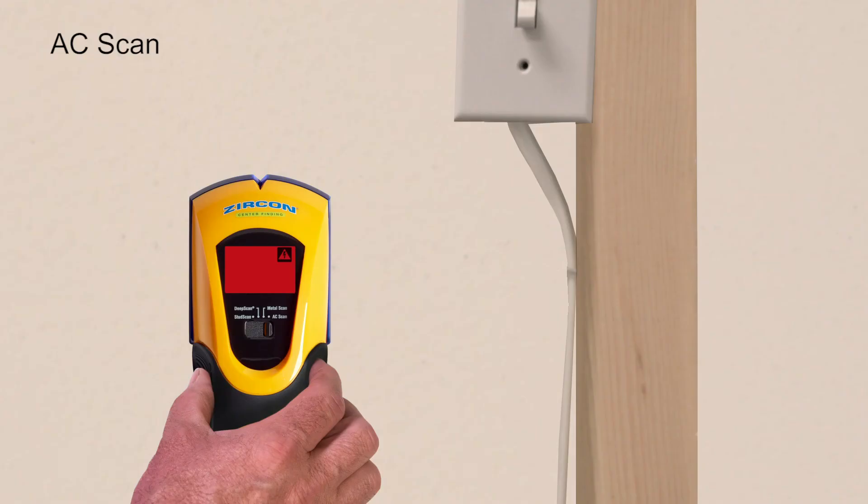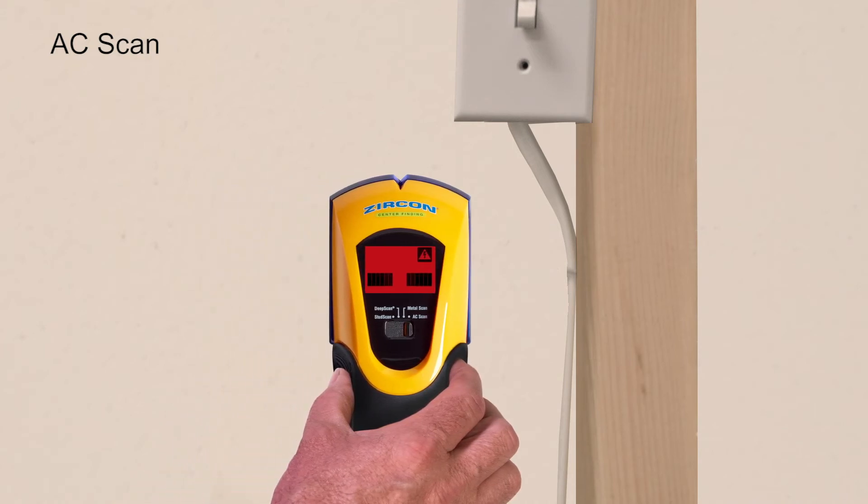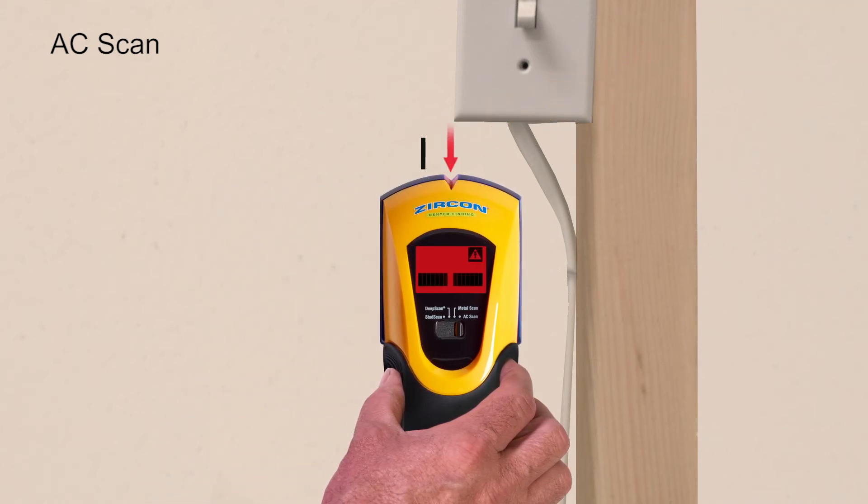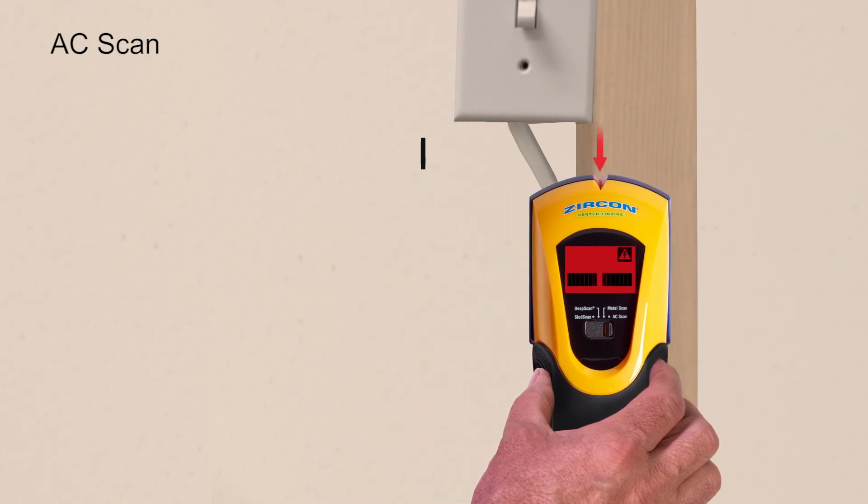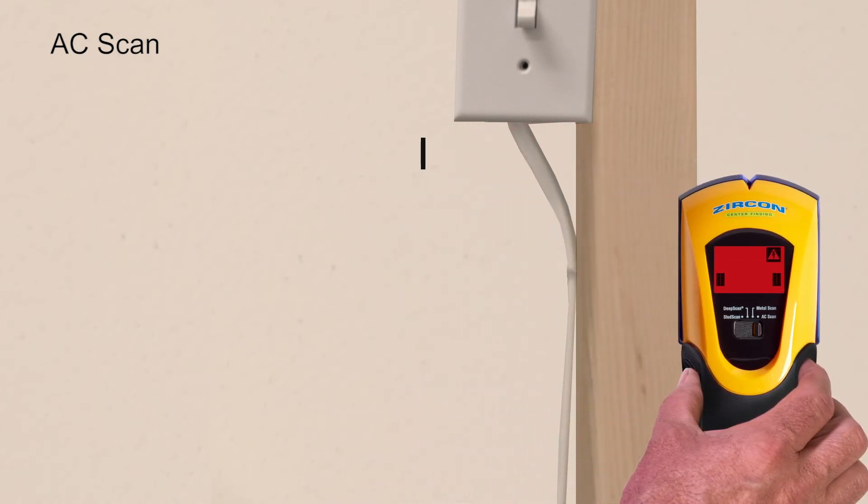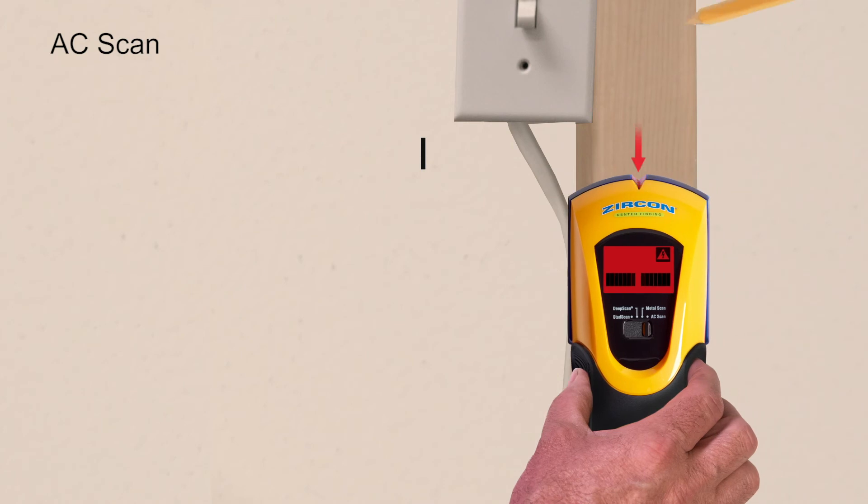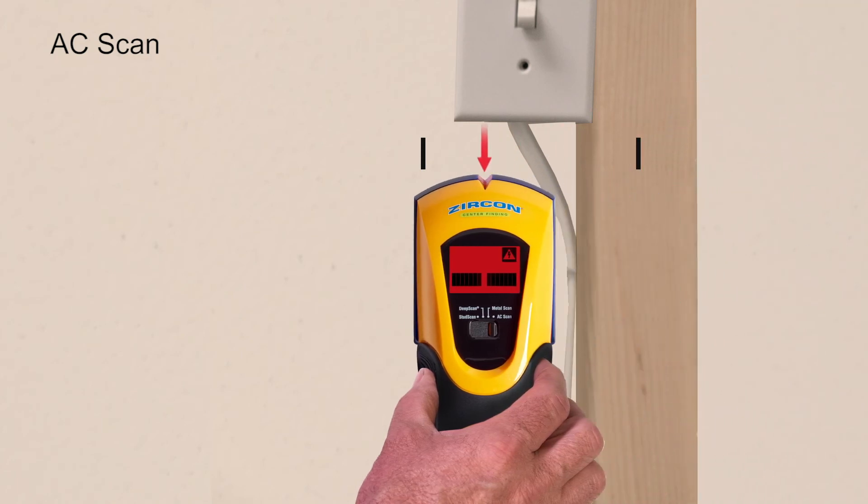To find AC voltage, select AC scan. The target indication bars ramp as you approach AC, and the spotlight pointer shines when you're near the target. To narrow the results, refer to the interactive calibration method in the instructions.